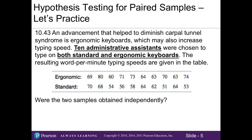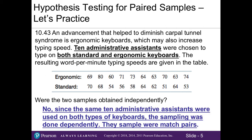Let's look at problem 43 in the textbook. An advancement that helped diminish carpal tunnel syndrome is ergonomic keyboards, which may also increase typing speed. Ten administrative assistants were chosen to type on both standard and ergonomic keyboards, and the resulting words-per-minute typing speeds are given in a table. Were the two samples obtained independently? No — since the same ten administrative assistants were used to test both types of keyboards, the sampling was done dependently, meaning we have a sample of matched pairs.